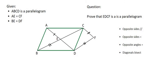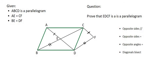They further tell us that AE is equal to CF, so we can see that over here. We've got AE equal to CF, and BE is equal to DF, so BE is equal to DF over there. And so the question is, prove that EDCF is a parallelogram.